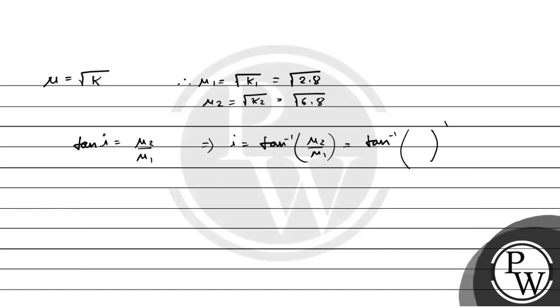This equals the square root to the power half, so 6.8 by 2.8. Now this equals tan inverse of 2.8 plus 4 by 2.8 to the power half.